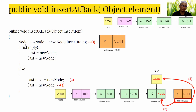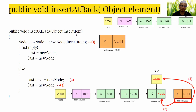Looking at the algorithm: start by creating a new node and assigning the data from the passed object into it. For example, if the new data is Y, the new node will contain Y with its next pointer still set to null.